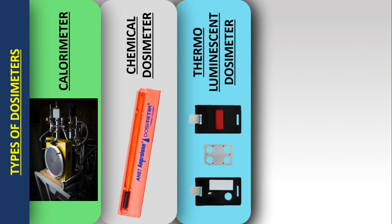When an electron in a metastable state is given enough energy, it will release a photon that represents the absorbed dose. In a thermoluminescence dosimeter, that electron is read out by providing heat energy.